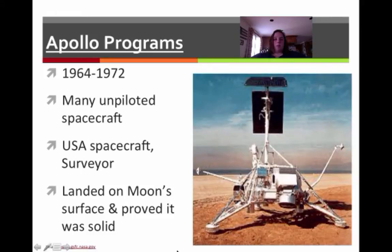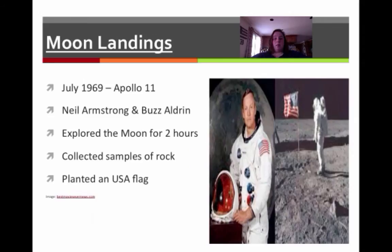So let's get into actually what was the Apollo program. Well, this happened between 1964 and 1972, and this comes into play exactly when we watched the Apollo movie the other day. There were many unpiloted spacecrafts, and these spacecrafts were called Surveyor, and this is a picture of them. They actually landed on the moon's surface and proved it was solid. We didn't know until we actually landed there if it was in fact solid and if we could walk there.